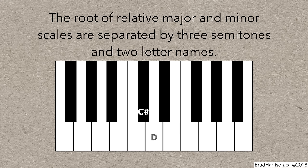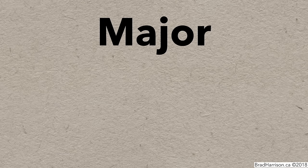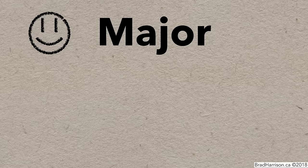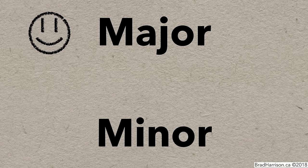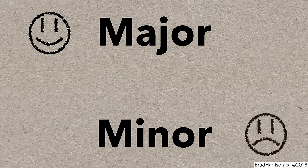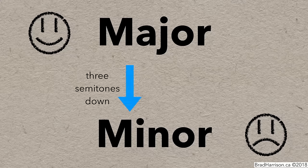Some people count the first note rather than the first semitone and end up only going up two semitones. Make sure to go three full semitones up or down. The relative major of C sharp minor is E major. To remember which direction is which, think of the quality of the scales. Major is a happy, bright sound — like nailing the garbage can with a piece of trash from across the room. Minor is a sadder, darker sound. So to go from major to relative minor, go three semitones down, and to go from minor to relative major, go three semitones up.